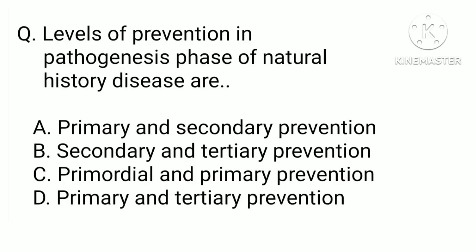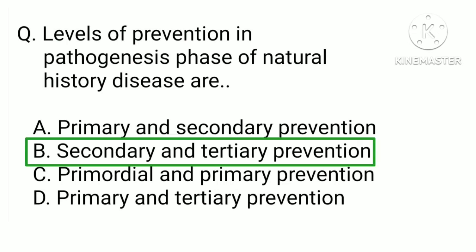Levels of prevention in the pathogenesis phase of the natural history of disease are: a) primary and secondary prevention, b) secondary and tertiary prevention, c) primordial and primary prevention, or d) primary and tertiary prevention. The correct answer is b) secondary and tertiary prevention. Pathogenesis means the origin and development of disease; since the disease process has already started, prevention at this level is secondary prevention, and it is tertiary prevention if pathogenesis is in an advanced or late or terminal stage.